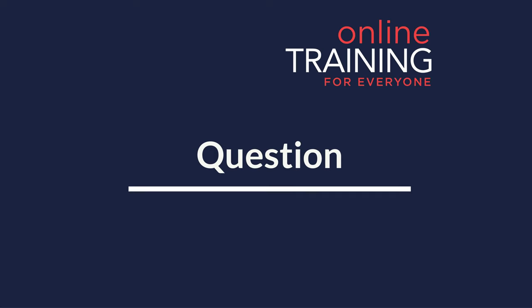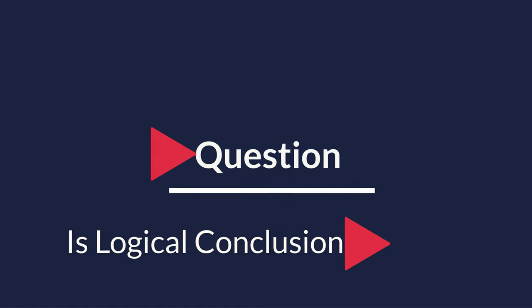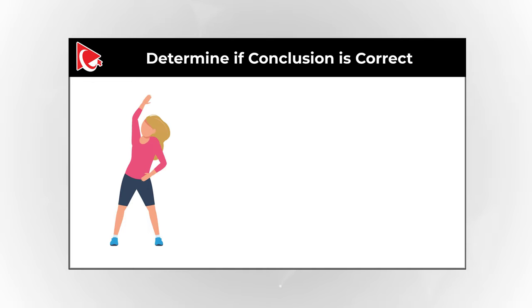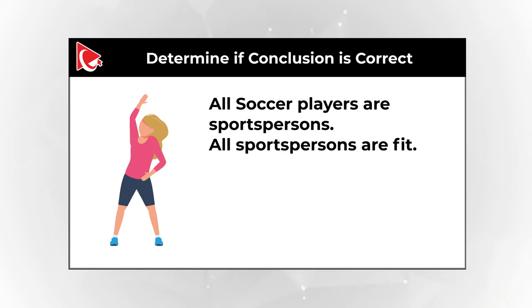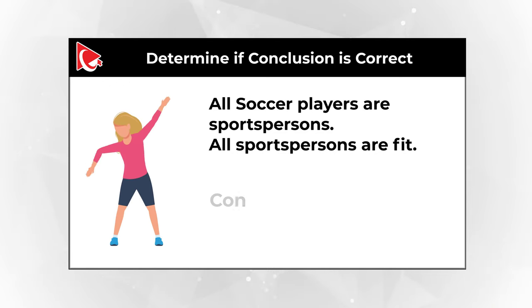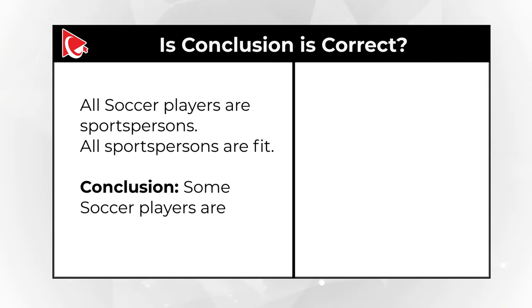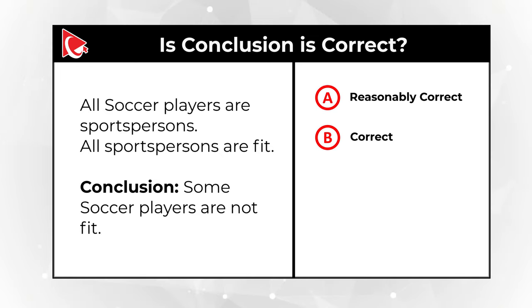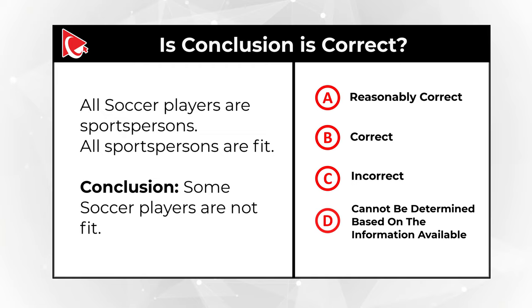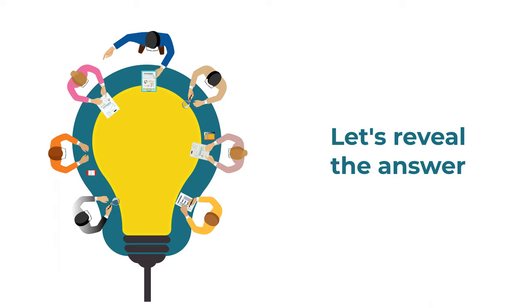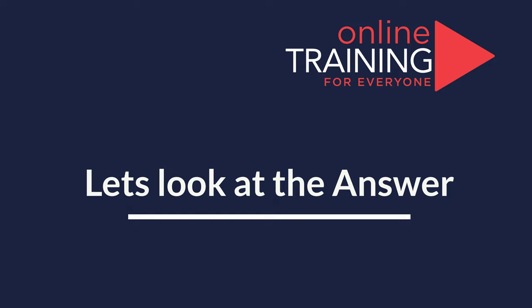Here is a frequently used question to test how logical you are. You need to determine if a conclusion is correct based on the statements. The statements are: all soccer players are sports persons, and all sports persons are fit. The conclusion is: some soccer players are not fit. You have four choices: Choice A, it's reasonably correct; Choice B, it is correct; Choice C, it's incorrect; and Choice D, cannot be determined based on information available. Give yourself a little bit of time — maybe pause the video and take another look.